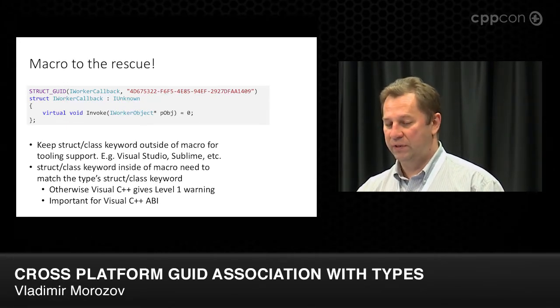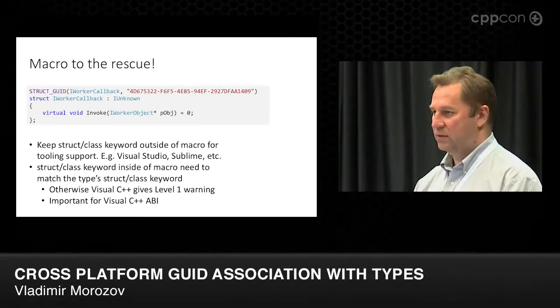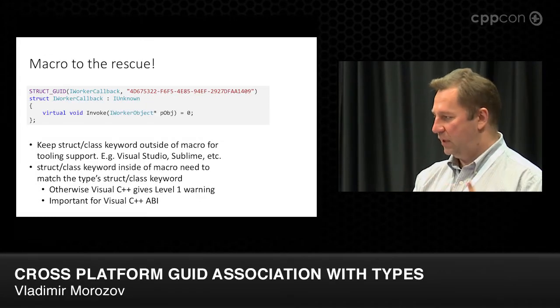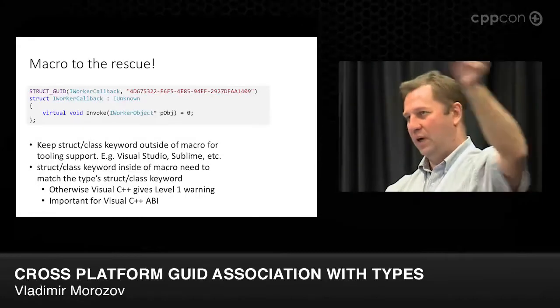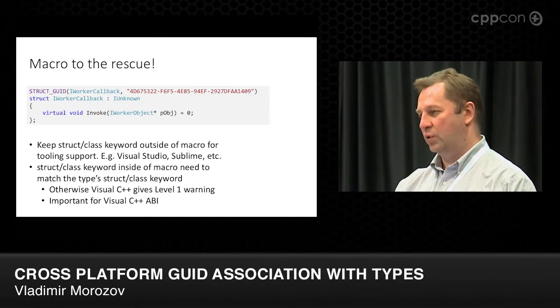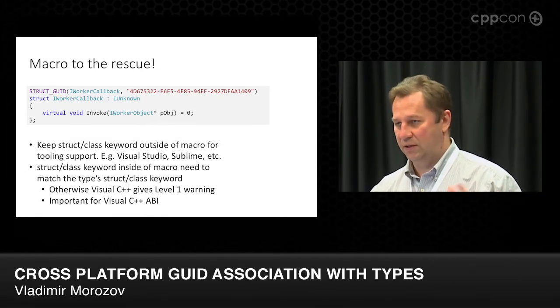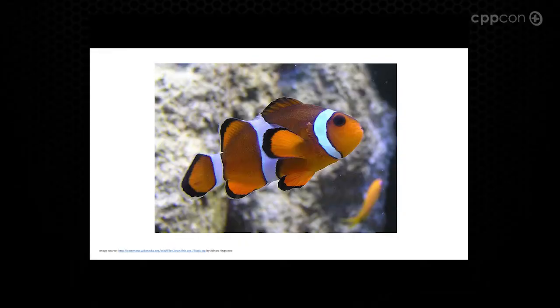Unfortunately, in this case the macro to define the GUID needs to be specific to struct or class, because in Visual C++ struct or class is actually part of ABI. Even though technically according to the standard struct and class are interchangeable, in Visual Studio if you forward-declare something as a class and later define it as a struct, you will get a level-one warning because it just doesn't work. It works probably fine in Clang and other standard-compliant compilers — so in reality we need two macros: STRUCT_GUID and CLASS_GUID.